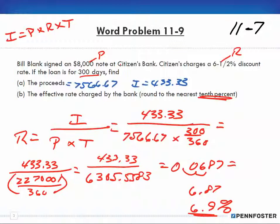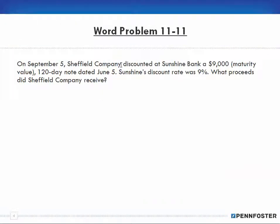Okay, so let's move on to problem 11-11. On September 5th, Sheffield Company discounted at Sunshine Bank a $9,000 maturity value, 120-day note dated June 5th. Sunshine's discount rate was 9%. What proceeds did Sheffield Company receive?